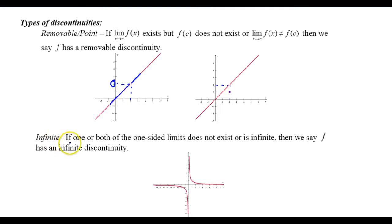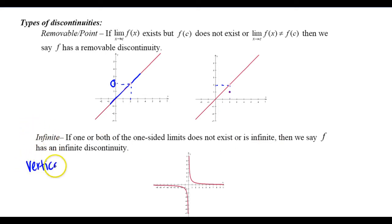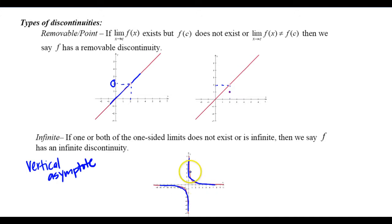The next type is an infinite discontinuity. This happens if one or both of the one-sided limits does not exist or is infinite. On a graph, infinite discontinuities represent vertical asymptotes. At the x value of a vertical asymptote, I would be drawing my function but then have to lift my pencil — that's where the infinite discontinuity is. So on a graph: a removable discontinuity is a hole, and an infinite discontinuity is a vertical asymptote.